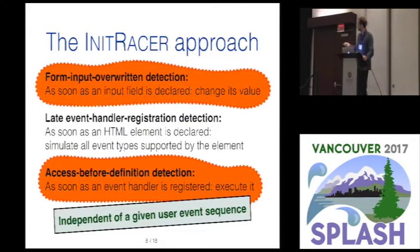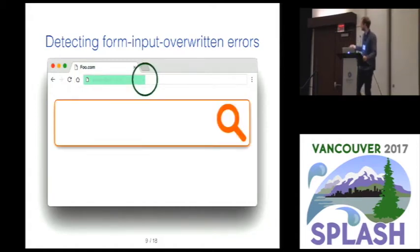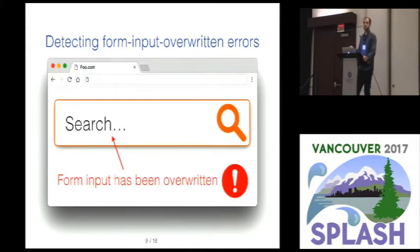For form input overwritten errors, our technique works by instrumenting the HTML and JavaScript source files and then loading the instrumented web page in the browser. At some point during loading a form field might be declared, and at this point the instrumentation updates the value of the text field — because this is the earliest point at which the user could do the same thing. At a later point, if a piece of JavaScript updates the value of the text field, the instrumentation intercepts that and we have an execution that witnesses a form input overwritten error, so we can issue a warning to the user. This approach provides a very simple race detector for this kind of issue.